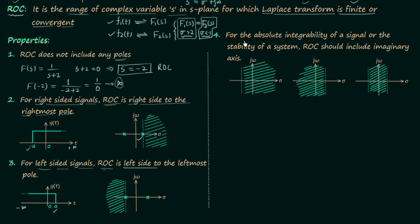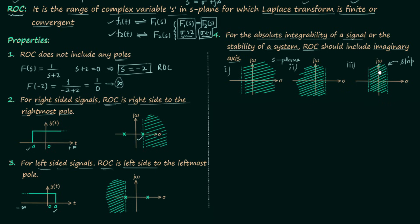The fourth property states: for absolute integrability of a signal, or the stability of a system, the region of convergence must include the imaginary axis. In the s-plane the y-axis is the imaginary axis. Three cases are shown — in each case the ROC includes the y-axis, meaning the imaginary axis is contained within the ROC, ensuring the signal is absolutely integrable and the system is stable.